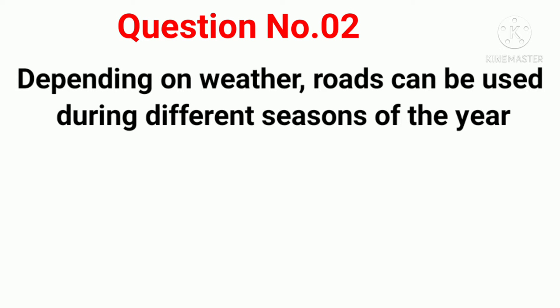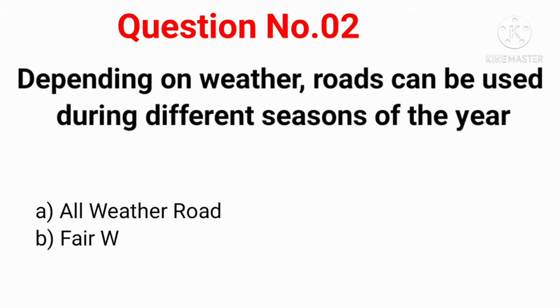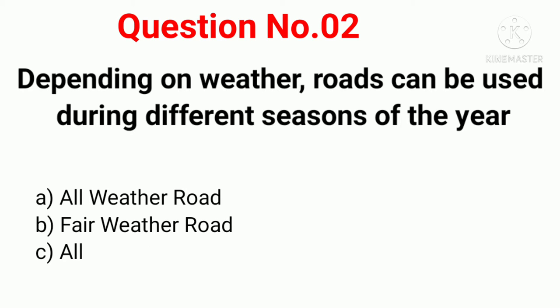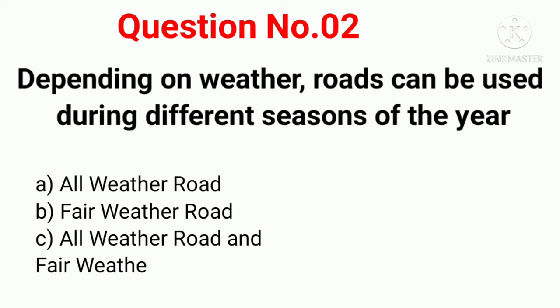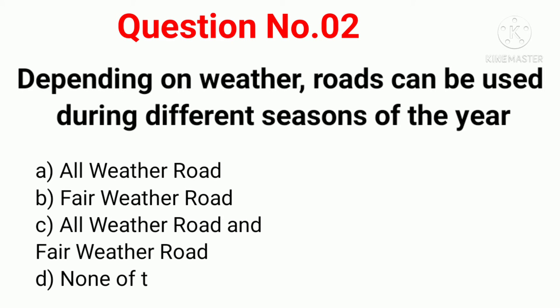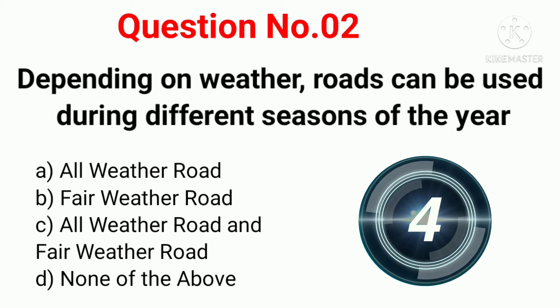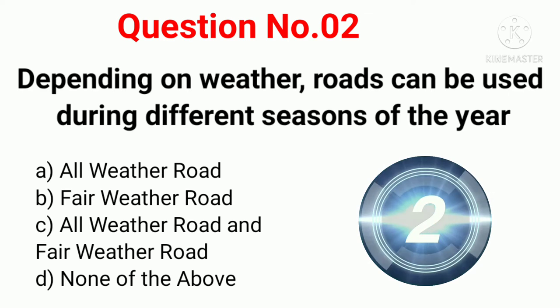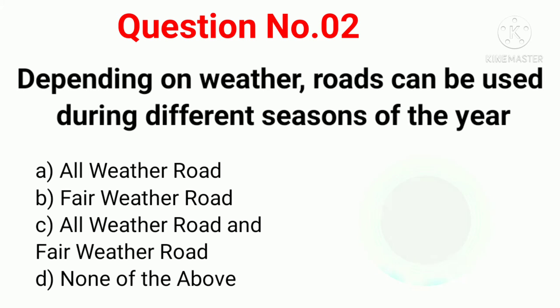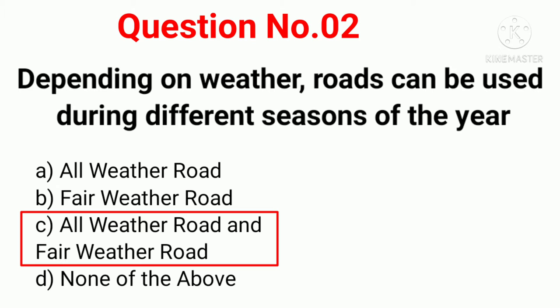Q2. Depending on whether roads can be used during different seasons of the year, roads are classified as: Option A: All weather road. Option B: Fair weather road. Option C: All weather road and fair weather road. Option D: None of the above. Correct answer: Option C, All weather road and fair weather road.